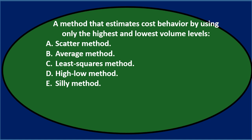Let's go through this again using the process of elimination. A method that estimates cost behavior by using only the highest and lowest volume levels. A, the scatter method — that doesn't seem quite right; scatter seems like a lot of levels between high and low. B, the average method — that sounds kind of reasonable because we're using the highest and lowest, maybe that's some kind of average. C, the least squares method — that sounds probably familiar, so I'll keep it for now. D, the high-low method — that sounds reasonable and familiar, and it has highest and lowest kind of in the words of it. E, the silly method — they probably wouldn't ask a completely silly question, so probably not E.